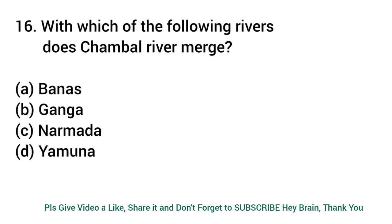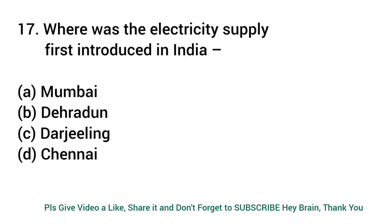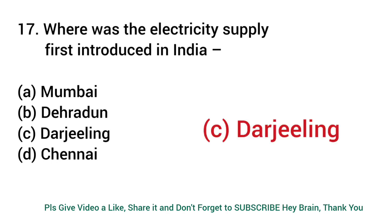With which of the following rivers does the Chambal River merge? Answer: Yamuna. Where was electricity supply first introduced in India? Answer: Darjeeling.